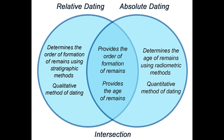Absolute dating determines the age of a rock or object using radiometric techniques. Absolute dating is quantitative. This technique helps determine the exact age of the remains. It is more specific than relative dating. Absolute dating is expensive and time consuming. It works best for igneous and metamorphic rocks.